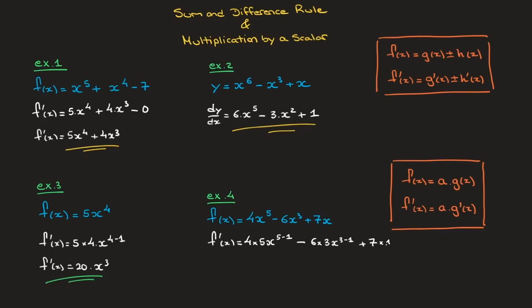Plus 7 times the derivative of x, which we've seen is just 1. Simplifying each of these terms leads to the result: f'(x) is equal to 20 times x to the power of 4 minus 18 times x to the power of 2 plus 7.